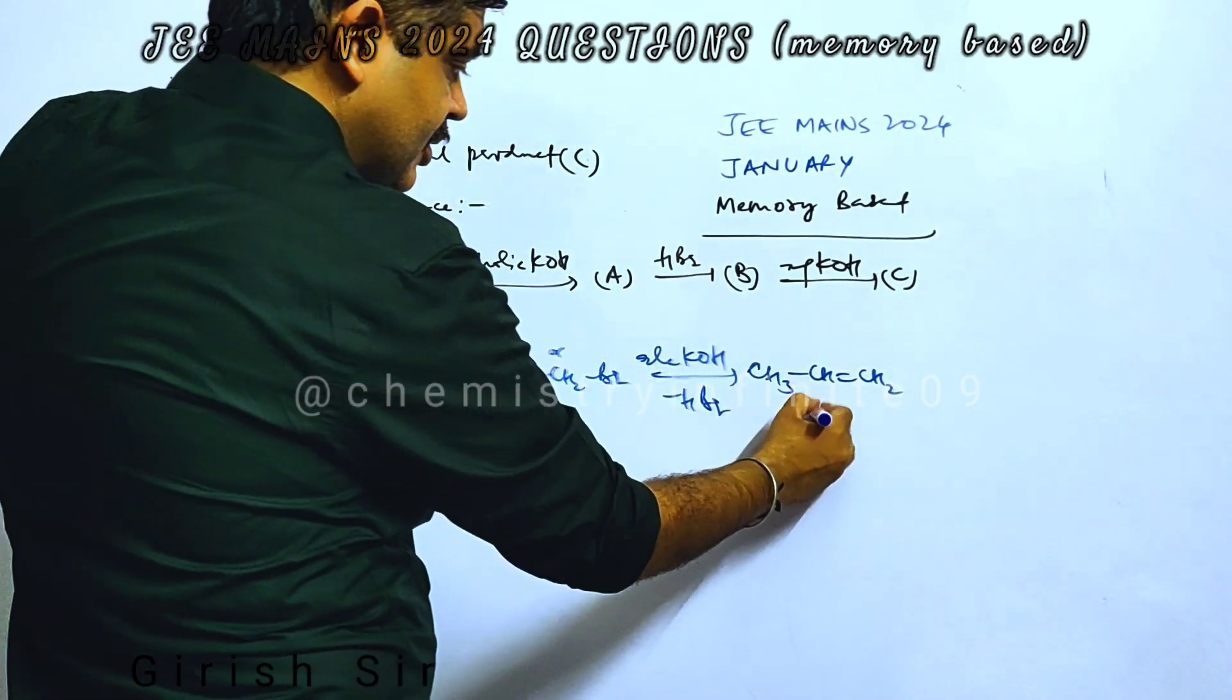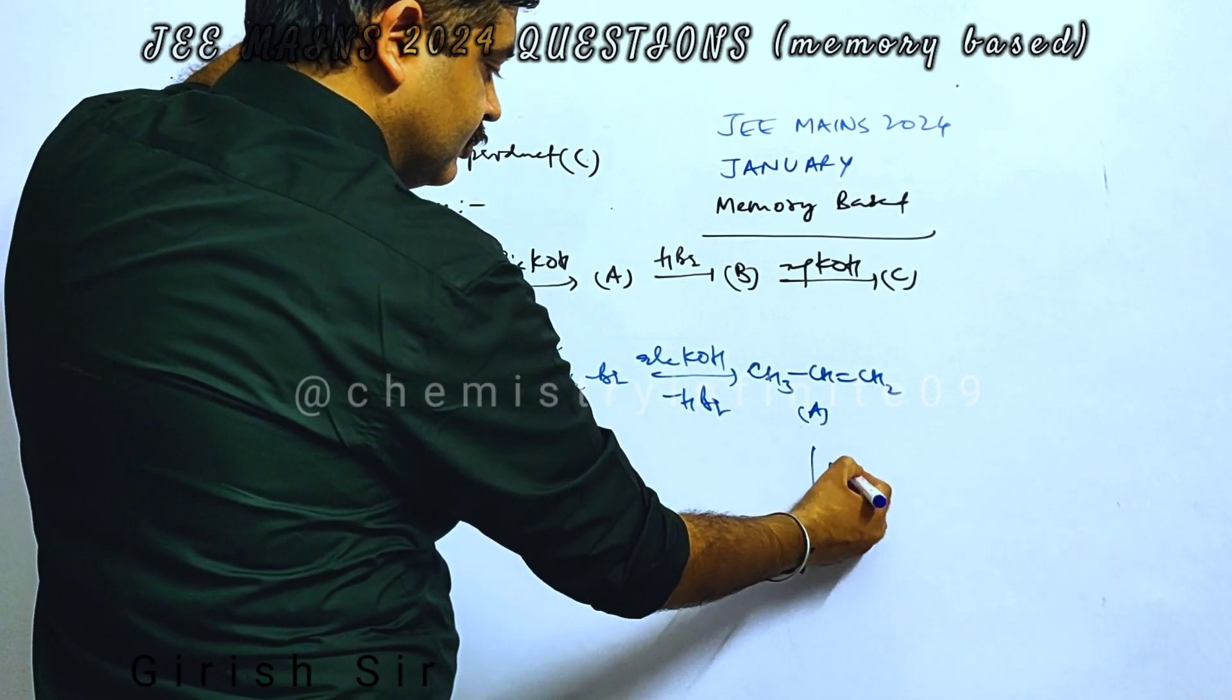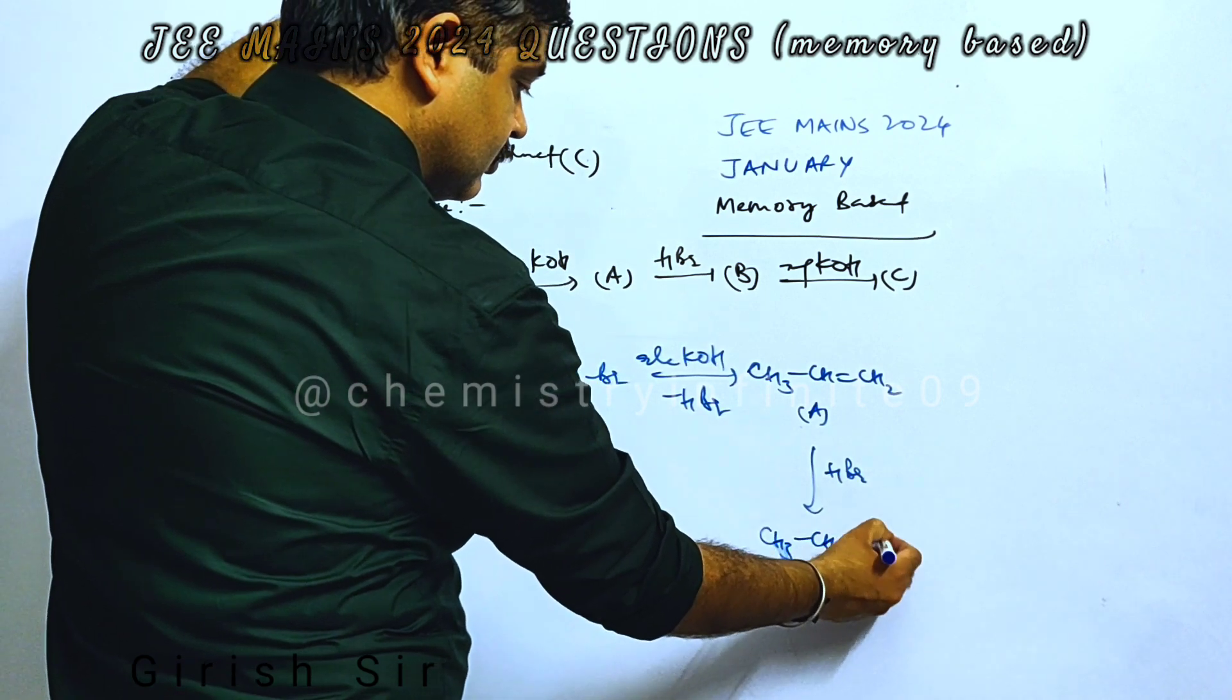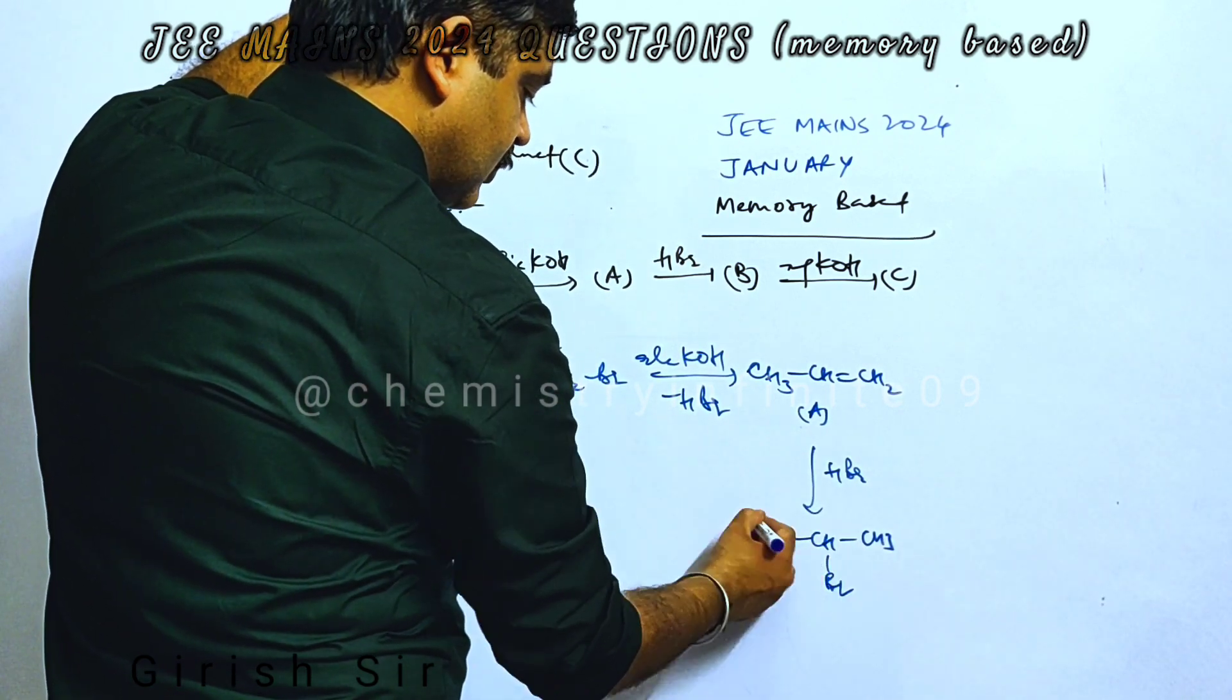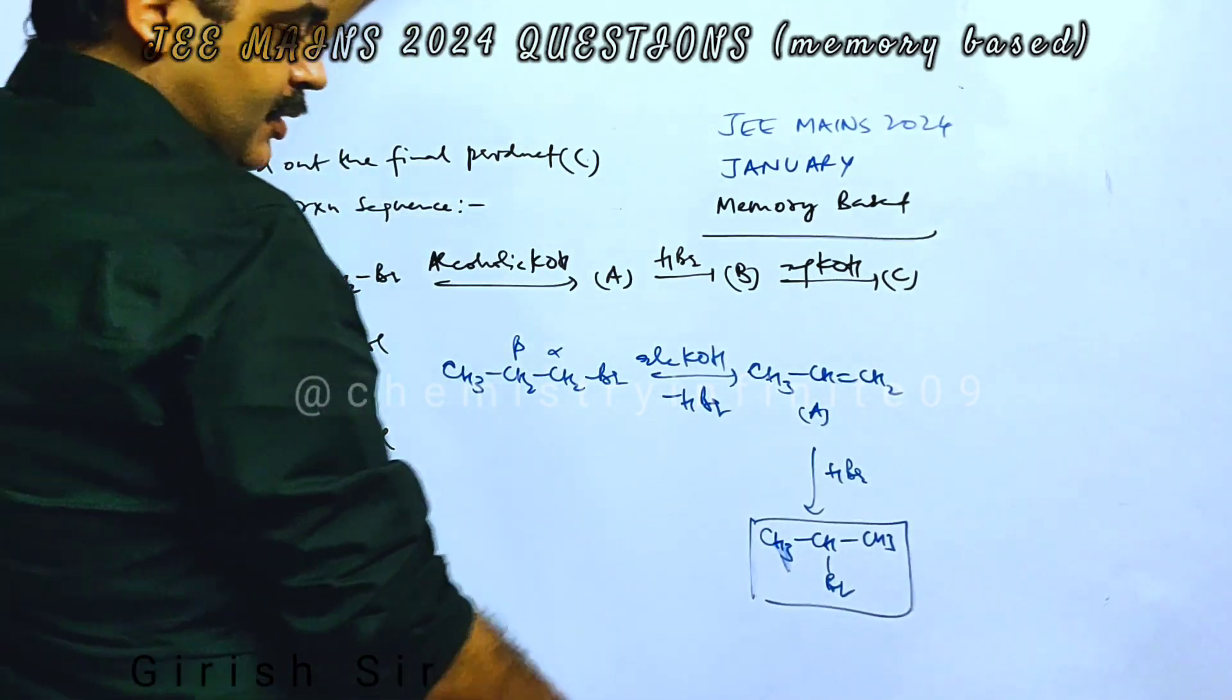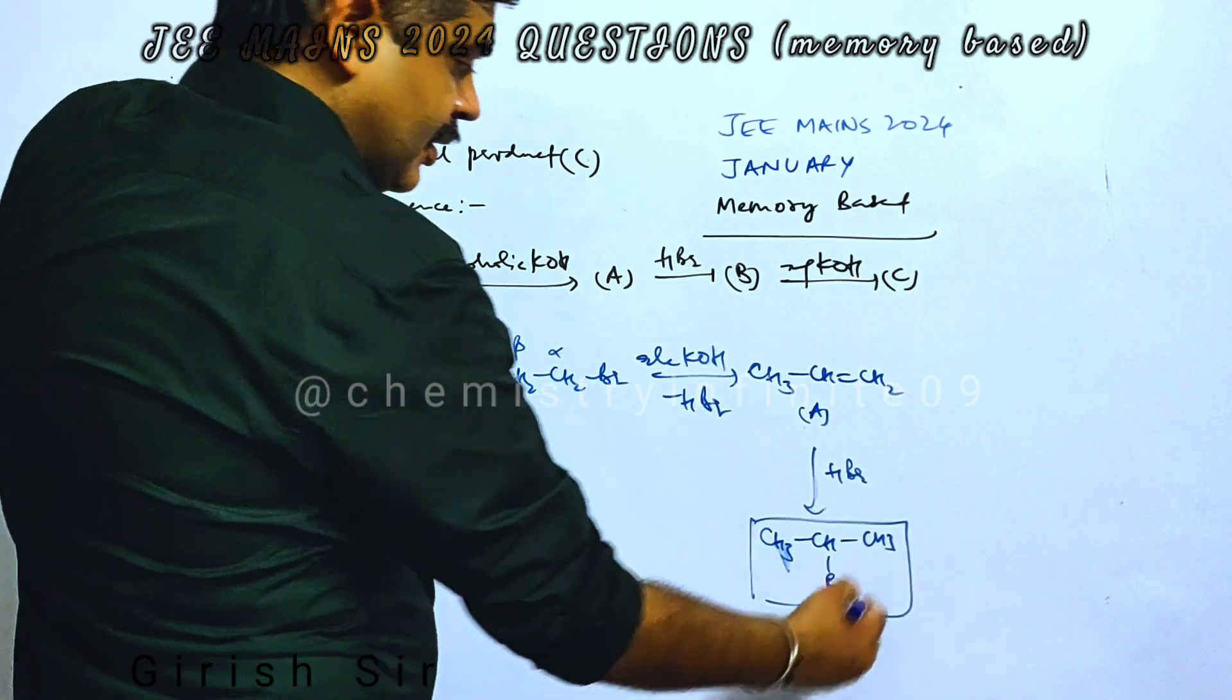The alkene is now treated with HBr. Markovnikov's rule should be followed during this addition, so you get 2-bromopropane as compound B.